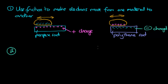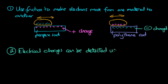Well number two. What about a way of detecting electrical charge? Electrical charges such as negatively charged polythene rods or positively charged cloths can be detected using a gold leaf electroscope.